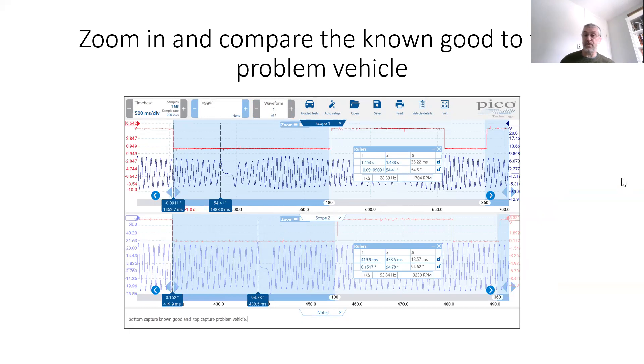So based on this, you would normally go back in and it gives you grounds to recheck the timing. But let's look at the vehicle history. It's already had the timing checked multiple times with multiple technicians and multiple tools.